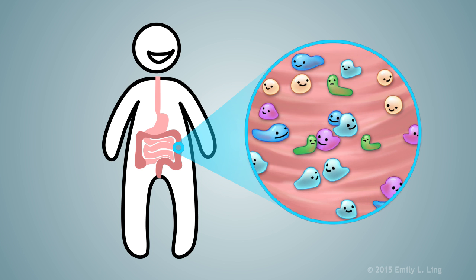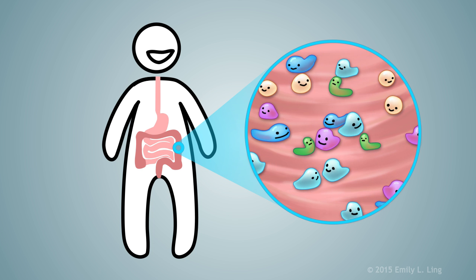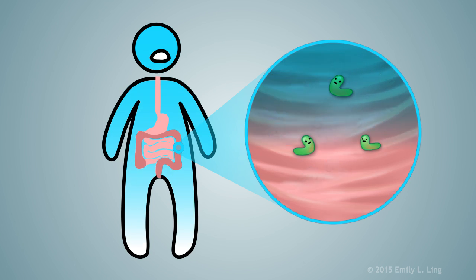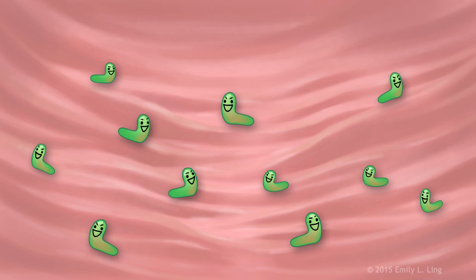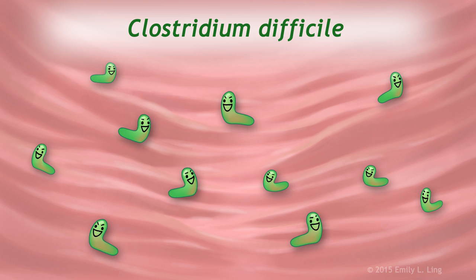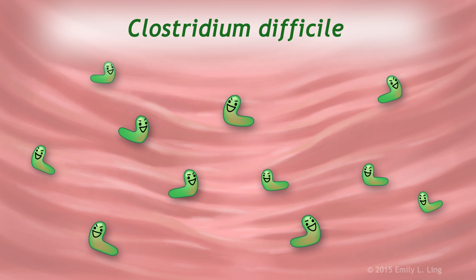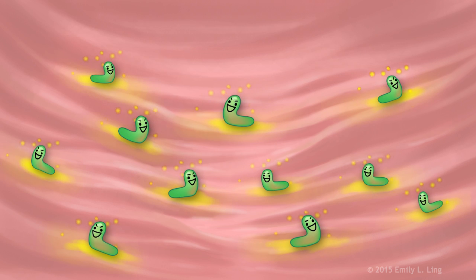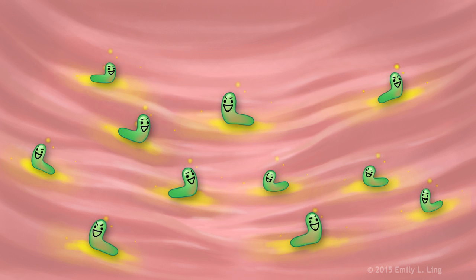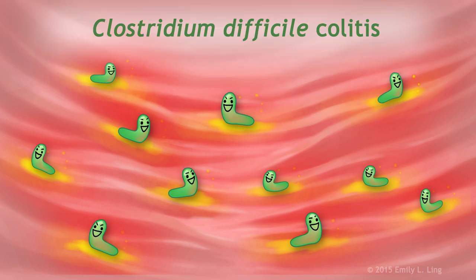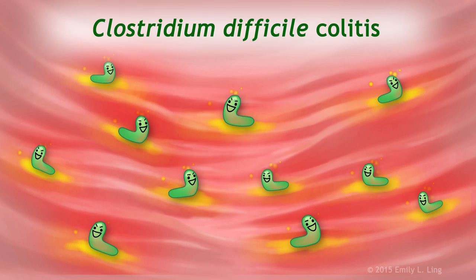However, conditions that require treatment with antibiotics can kill off many of the good bacteria in the colon, allowing the bad bacteria, called Clostridium difficile, to take over. Toxins released by Clostridium difficile can damage the lining of the colon, a condition known as Clostridium difficile colitis.